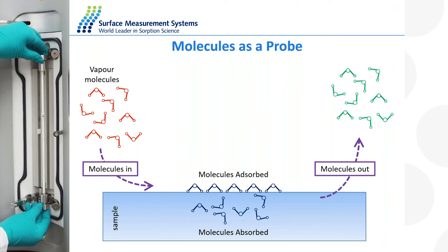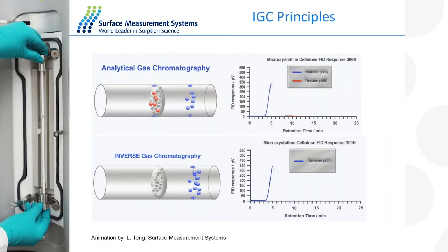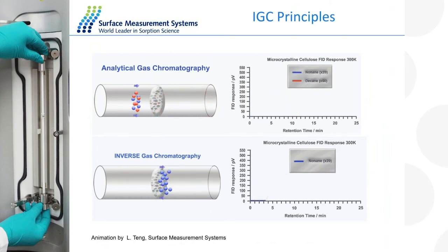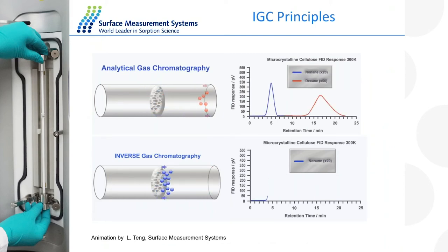Those molecular interactions tell us something quite intimate and innate about the chemistry of that material — things that aren't always possible to see spectroscopically or using thermal techniques. The first technique I want to introduce today is inverse gas chromatography. Many of you will be familiar with traditional analytical gas chromatography, shown at the top of the slide.